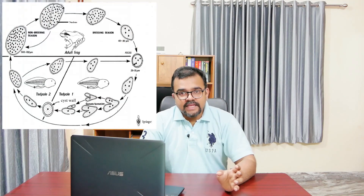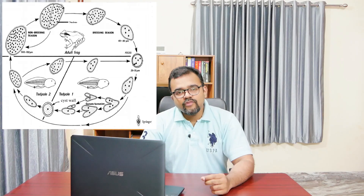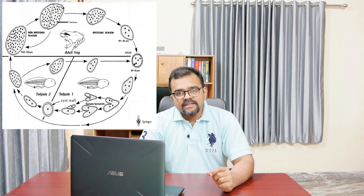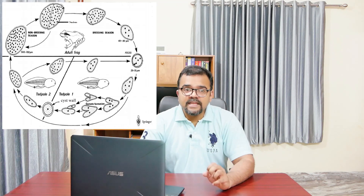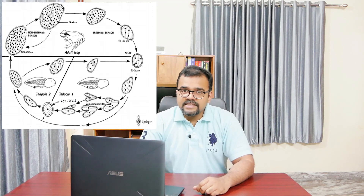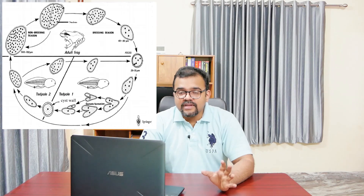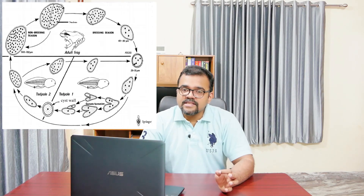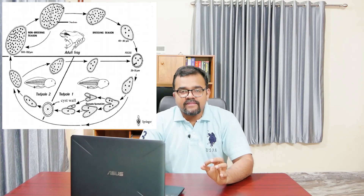Reproduction in Opalina takes place by longitudinal binary fission during most of the year. During fission, the nuclei do not divide but are shared equally between the two daughter cells. In spring, reproduction takes place by binary plasmatomy, in which cell division is repeated again and again without division of the nuclei, so that many daughter cells are produced, each with a few nuclei.